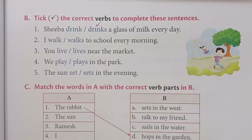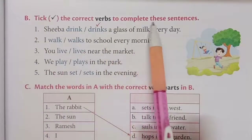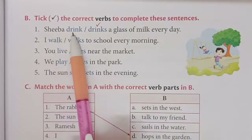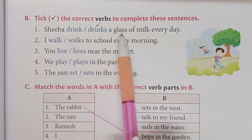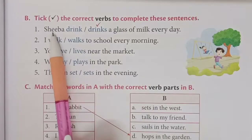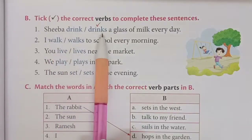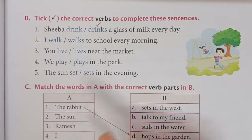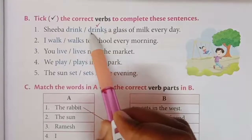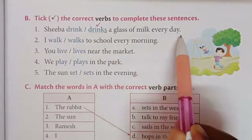See page number 41. Write the correct verbs to complete these sentences. Number 1 — Shiba drink or drinks a glass of milk every day. Here Shiba is a singular noun, and when it is a singular noun we use 's' with the verb. So the correct answer is 'drinks.' Shiba drinks a glass of milk every day.